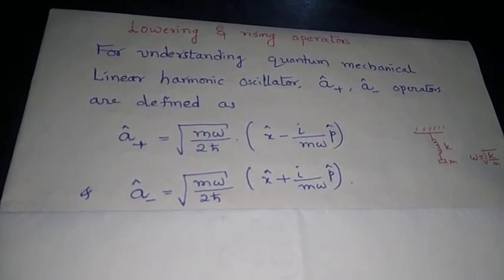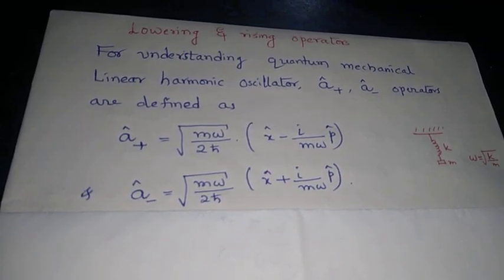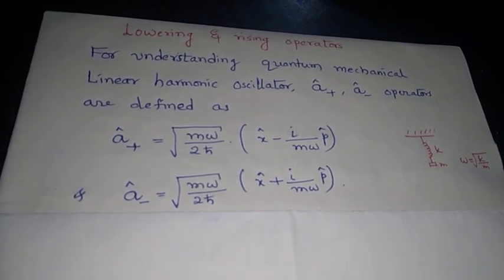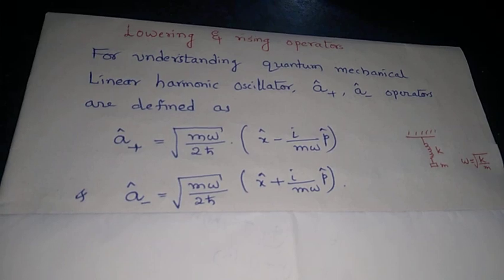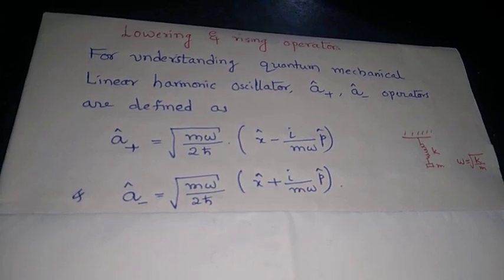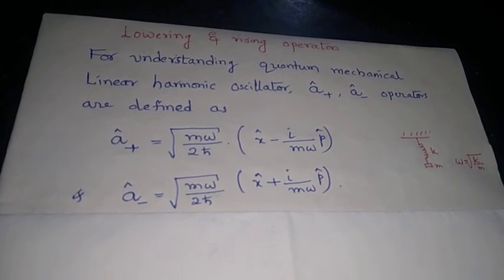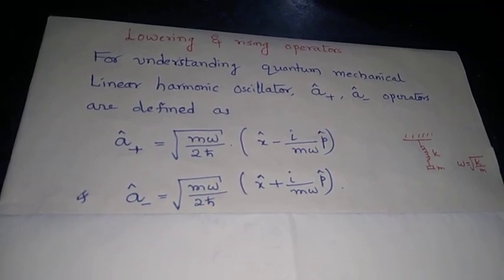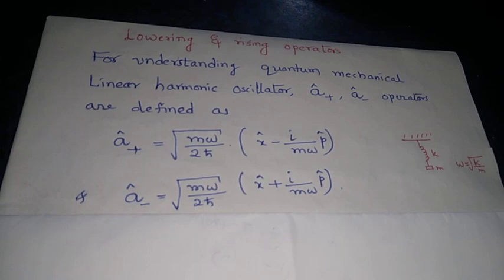The lowering operator is defined as a kind of dagger of A plus as the second equation. Remember that the linear harmonic oscillator is a particle of mass m attached to a spring of spring constant k, executing periodic motion with angular frequency square root of k by m.